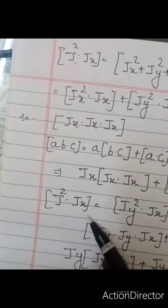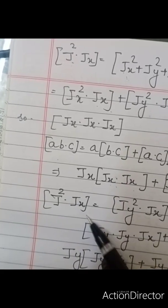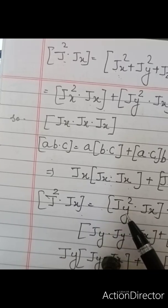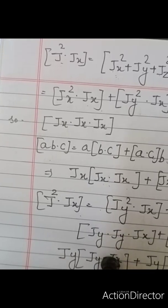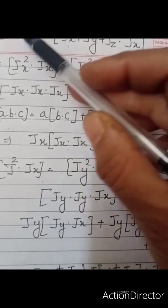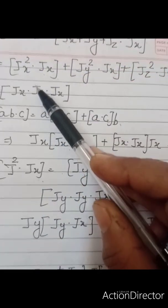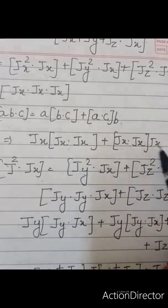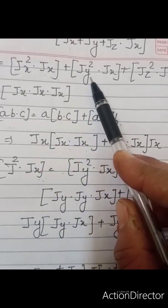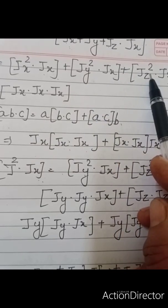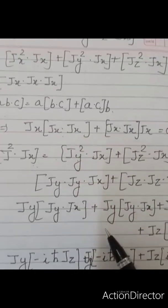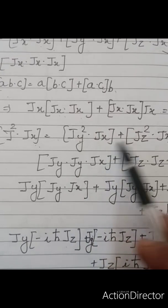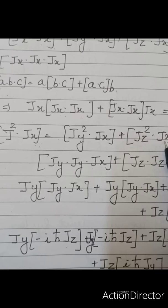So J square JX will be equal to... Now what is left? Let us solve this further. This portion we have already solved. So this can be deleted. Now what is left is JY square JX and JZ square JX. So this I am writing here: JY square JX and JZ square JX.